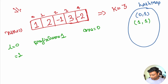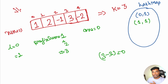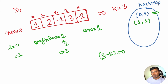At index 1, we add 2, so prefix_sum becomes 3. We check the hash map for 3 minus 3 = 0. There is one entry with value 0, so the answer becomes 1. We then add {3: 1} to the hash map.